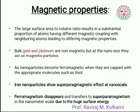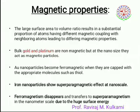Regarding magnetic properties, the large surface area to volume ratio results in a substantial proportion of atoms having different magnetic coupling with neighboring atoms, leading to differing magnetic properties. Bulk gold and platinum are non-magnetic, but at the nano size they act as magnetic nanoparticles. Gold nanoparticles become ferromagnetic when capped with appropriate molecules such as thiols. Iron nanoparticles show a superparamagnetic effect at nanoscale — ferromagnetism disappears and transfers into superparamagnetism due to huge surface energy.